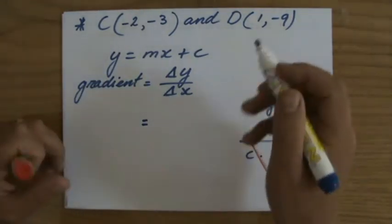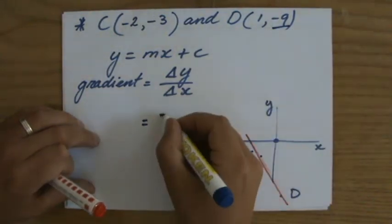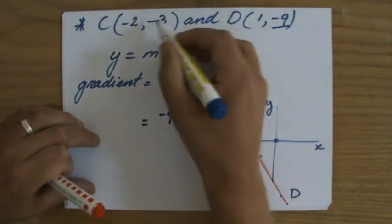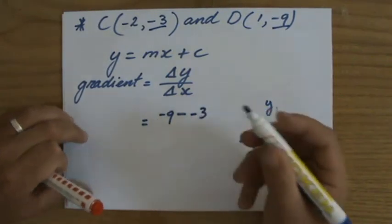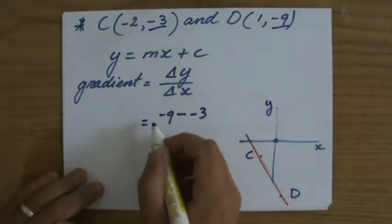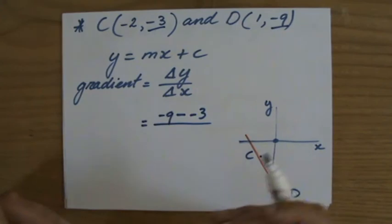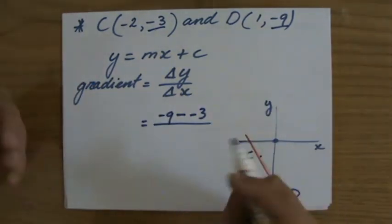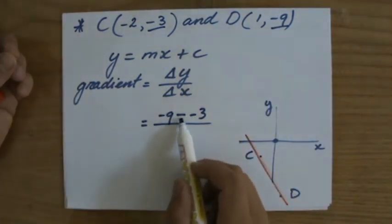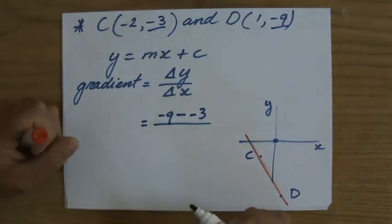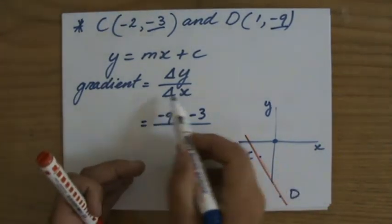All right, so delta y. So -9 minus -3. And I take care when I'm doing this. I don't go too quick, and I use my intonation of my voice, because those minus signs there are very important, naturally.